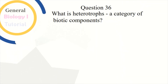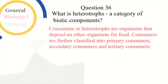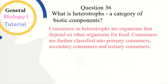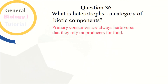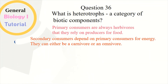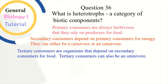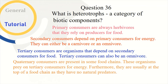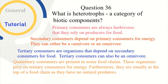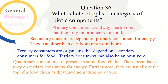Question 36: What are heterotrophs as a category of biotic components? Consumers or heterotrophs are organisms that depend on other organisms for food. Consumers are classified into primary, secondary, and tertiary consumers. Primary consumers are always herbivores that rely on producers. Secondary consumers depend on primary consumers and can be carnivores or omnivores. Tertiary consumers depend on secondary consumers and quaternary consumers prey on tertiary consumers; they are usually at the top of the food chain with no natural predators.